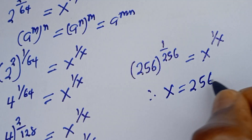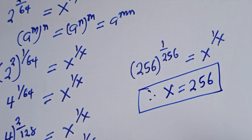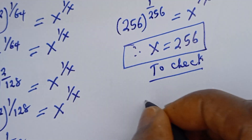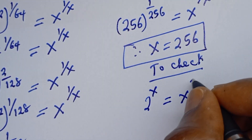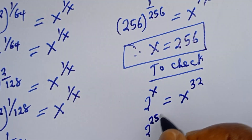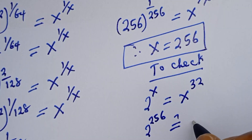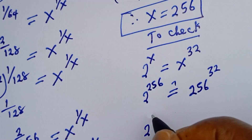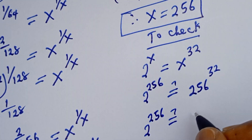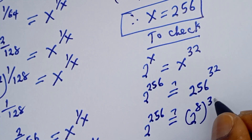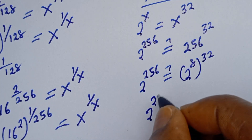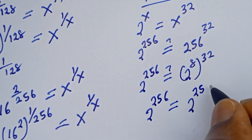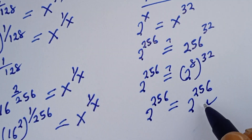Comparing both sides, therefore s is equal to 256, which is the final answer. Let's check: substituting into the original equation, 2 to the power of 256 must equal 256 to the power of 32. Now 256 to the power of 32 equals 2 to the power of 8 to the power of 32, which is 2 to the power of 256 — and that equals the left-hand side. The left-hand side equals the right-hand side. Confirmed!